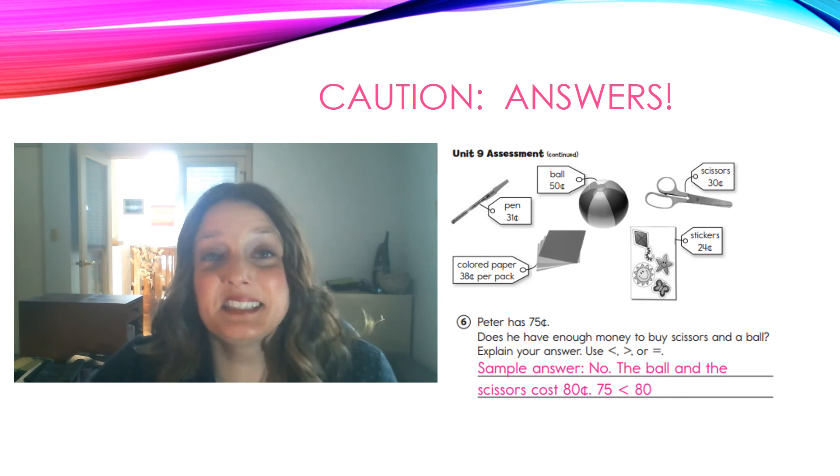Alright, let's see how you did. Does Peter have enough money to buy the scissors and the ball? No. The ball and the scissors cost 80 cents when you add them together. He does not have enough money. When you compare those numbers, you write 75 is less than 80.